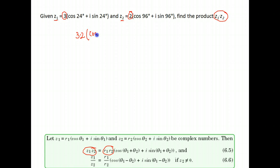Then we have the cosine of, when you're multiplying you add the angles. So the cosine of 24 plus 96 degrees, plus i sine of the two angles added together. You should end up with the same angle for both sine and cosine.